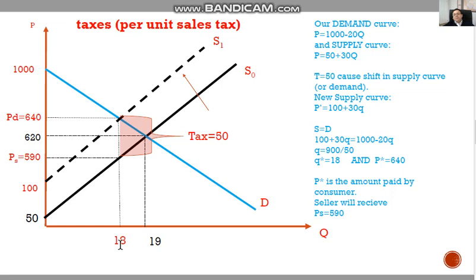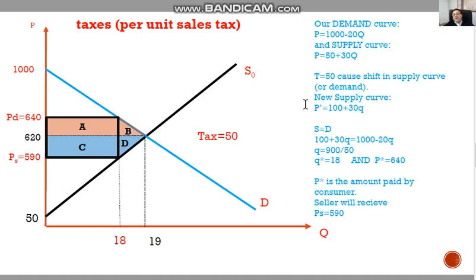By plugging this number into the demand curve, we find how much the consumer paid. If we plug this number into the initial supply curve, we see how much the seller receives. The difference, 640 minus 590, equals 50 Turkish lira, which is equal to the tax. This is basically what happens before and after tax, and in the second step, this is a government intervention.